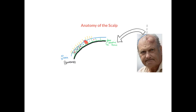Moving further into the layers of the scalp, we come to the loose connective tissue layer. As the name suggests, this is a layer of very loosely arranged connective tissue sitting just beneath the aponeurosis. You can appreciate this layer by placing your hand on top of your head and trying to wriggle or move the scalp — you'll notice a degree of movement. That's because the loose connective tissue allows the other scalp layers to slide over the bones of the skull.